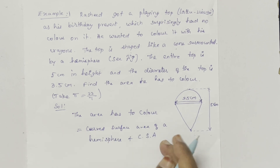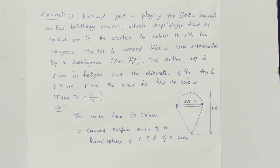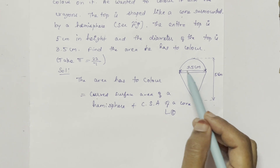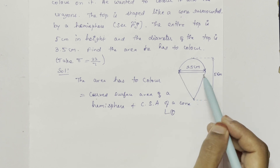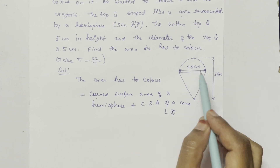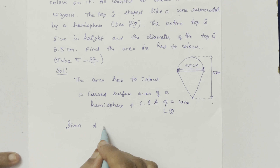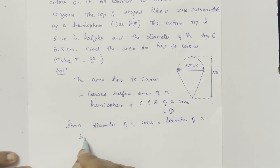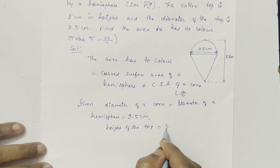Curved surface area of a cone — now let's set up the given values. The diameter of the cone equals the diameter of the hemisphere equals 3.5 cm. The height of the top equals 5 cm.